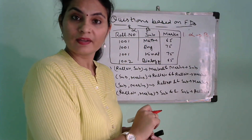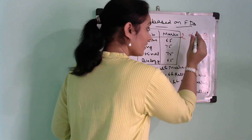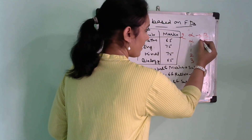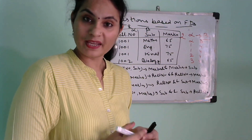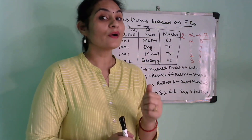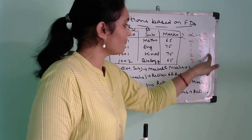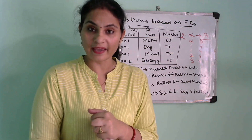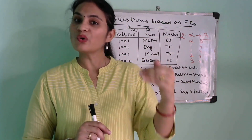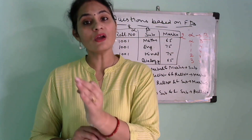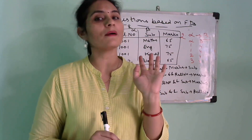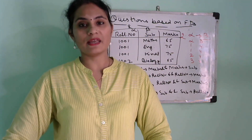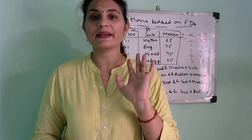The second trick: for alpha to beta, if beta's values are all the same throughout the entire column, then the functional dependency is also valid. For example, even if alpha repeats, if beta is always the same value, we have no conflict — so the FD holds good.